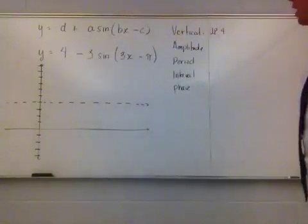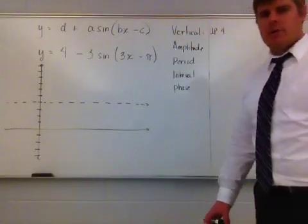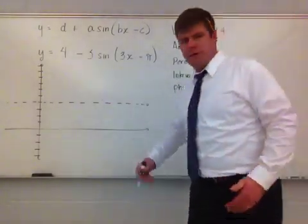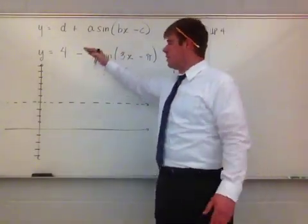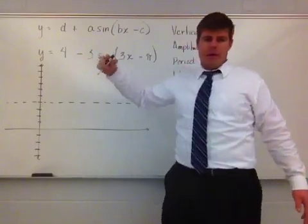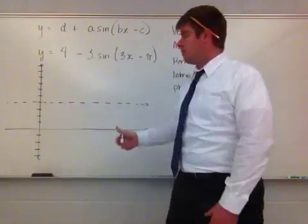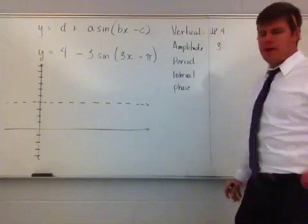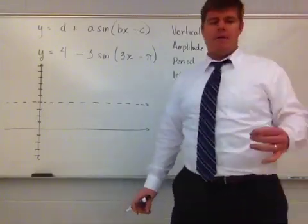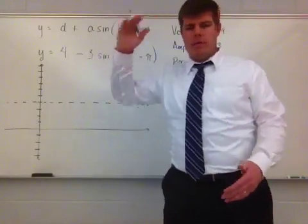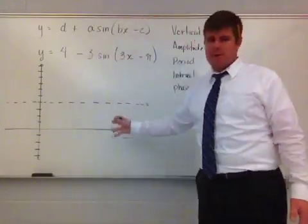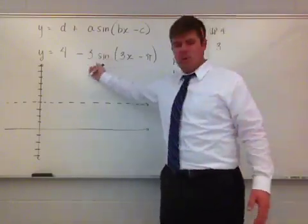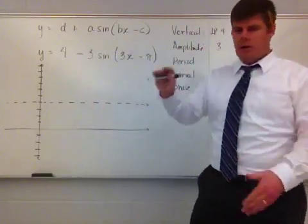After identifying the vertical shift, I look at my amplitude. The amplitude is the absolute value of the coefficient of the actual function. My function has a negative 3, so the absolute value of negative 3 is positive 3 — my amplitude is 3. Remember, that's a measurement of the halfway point between your maximum and your minimum, but here it's just the multiplier of your function that we use for graphing.